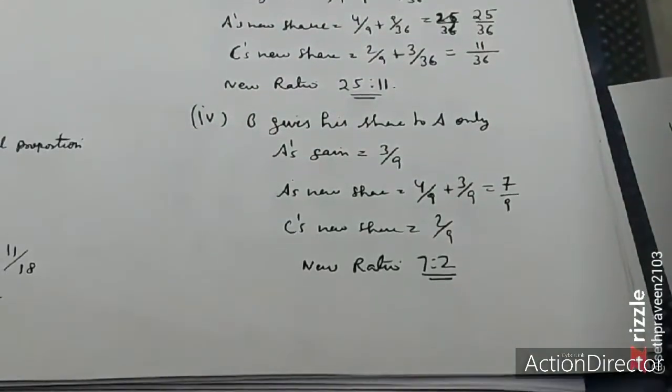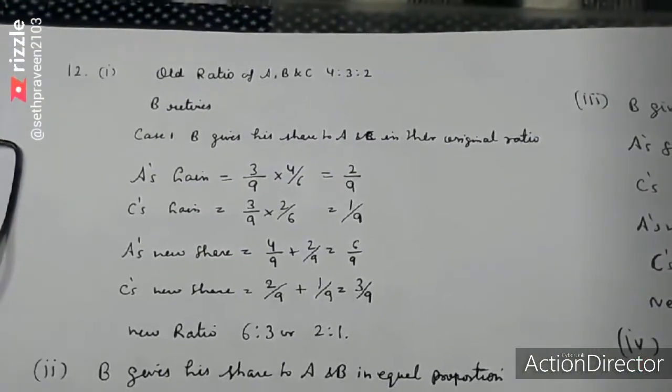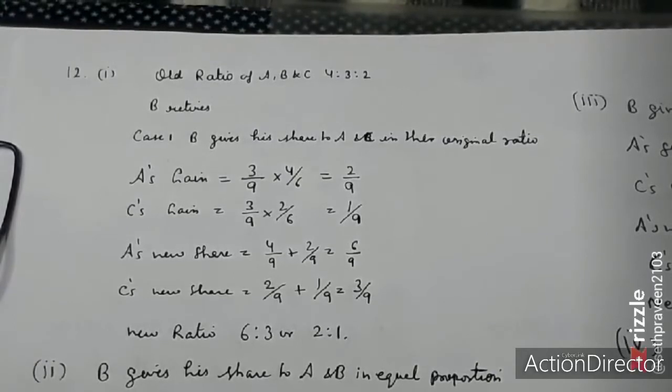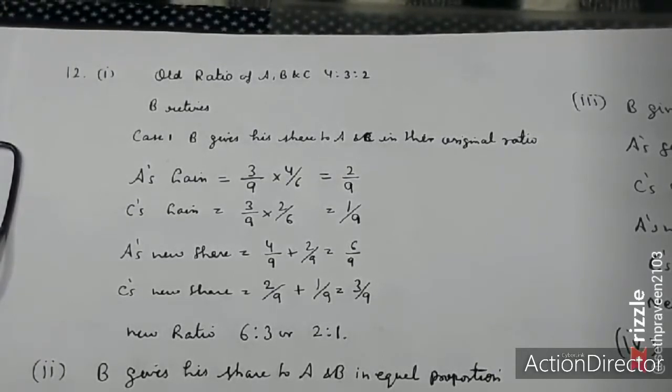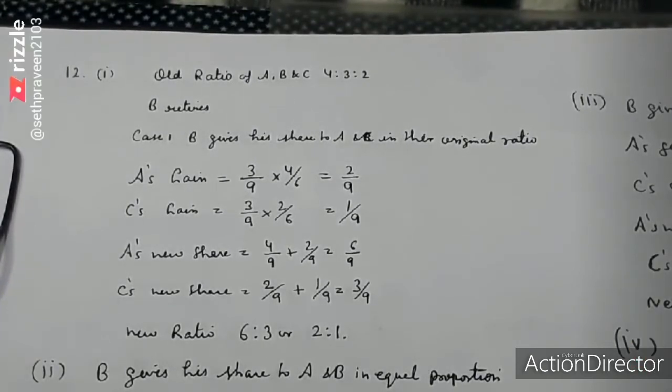Now let's talk about question number 12, which has 4 parts. In the first part, ABC is a partner with 4 to 3 to 2 ratio. B has 3 by 9 share. He gave up his share to A and C in original ratio. So 3 by 9 is divided as 4 to 2.